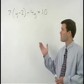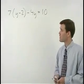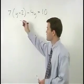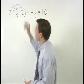In this equation, our first task is to simplify the left side. So we start by distributing this 7 through both terms inside the parentheses.